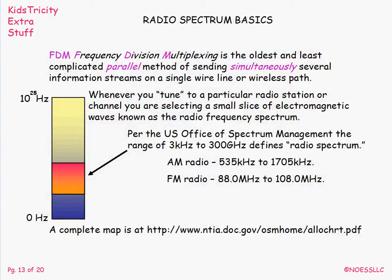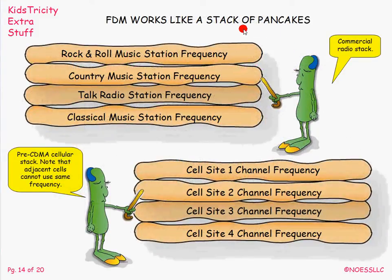To understand how that works, you need to know a little bit about radio. There's a whole range of frequencies in what we call the radio spectrum. AM ranges from around 500 to 1600 kilohertz. FM radio is in the megahertz range — that doesn't mean it hurts a lot. This range of frequencies can be divided up like a stack of pancakes: when you tune your radio to rock and roll, you're on a different 'pancake.' Pre-CDMA cellular also used a stack like this, where cell site one had one frequency, cell site two had another, and so on.